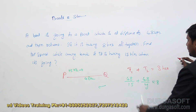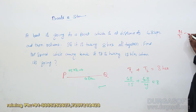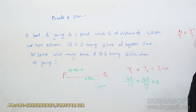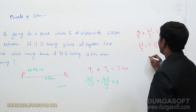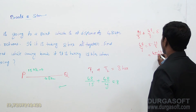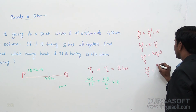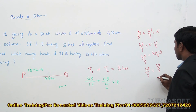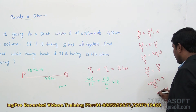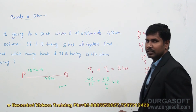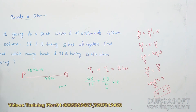From 48/Y equals 24/5, we get Y equals 48 into 5 divided by 24, which gives Y equals 10. So the speed of the boat while coming back is 10 kilometers per hour.